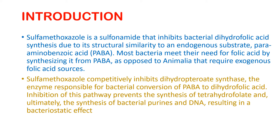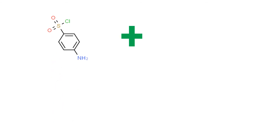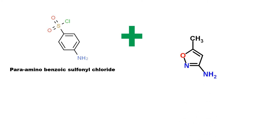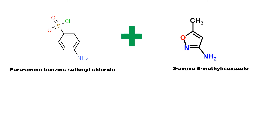Now we will move towards the synthesis. The starting materials consist of two components. The first compound is para-aminobenzenesulfonyl chloride. This compound reacts with 3-amino-5-methylisoxazole, which has an isoxazole ring with an amine group at the third position and a methyl group at the fifth position.